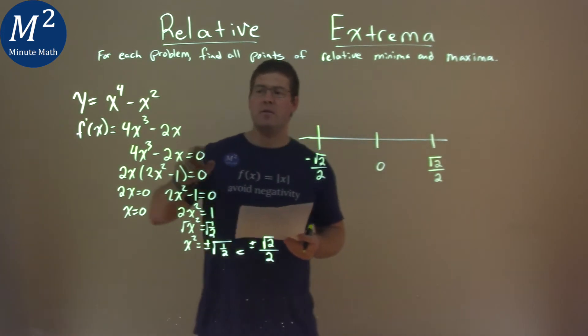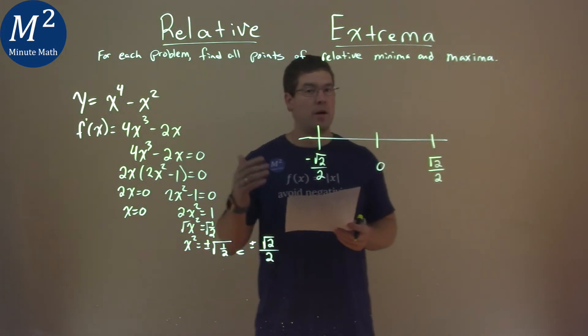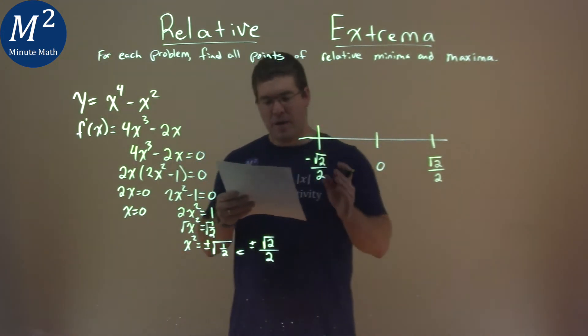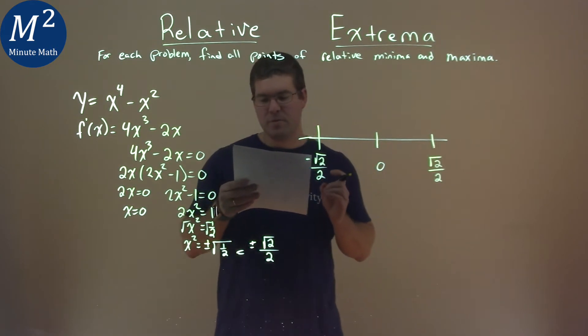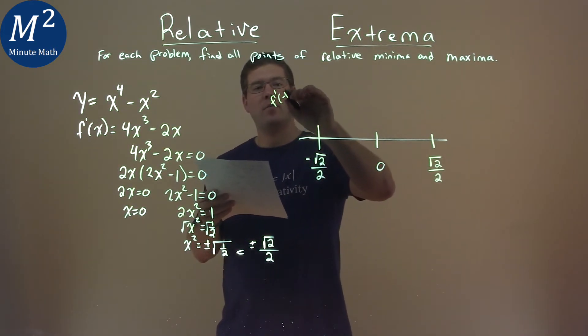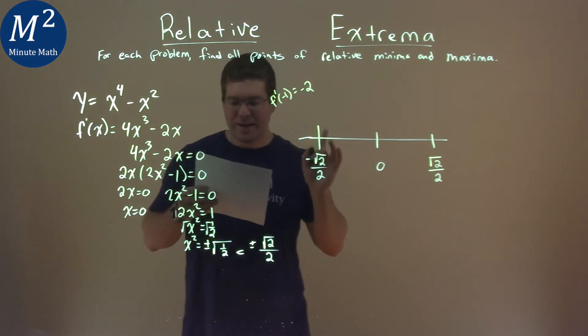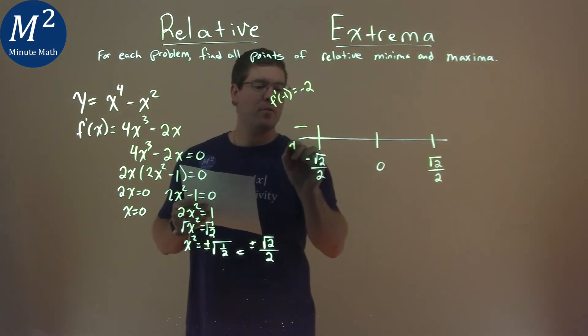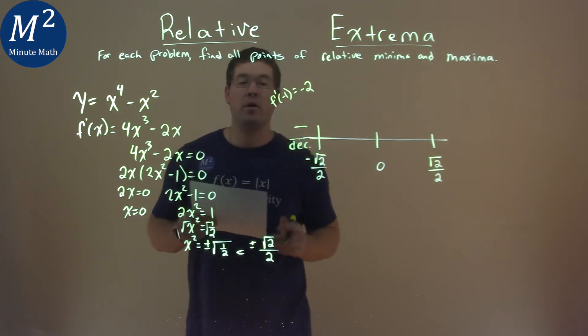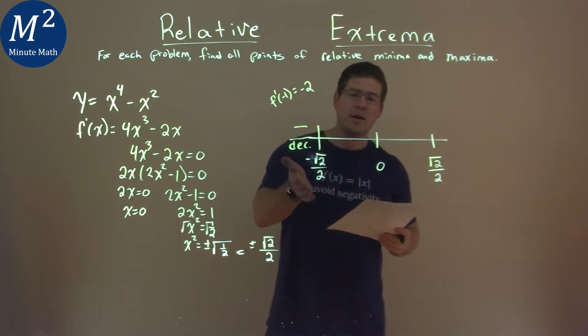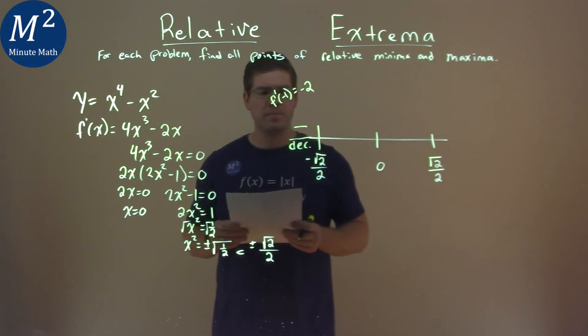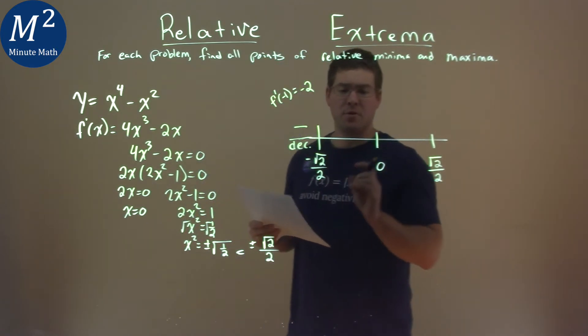So we're plugging values into our derivative here to see if they're positive or negative. A value that's less than negative square root 2 over 2 is negative 1. So I picked f prime of negative 1, plugged it into my function, and I got negative 2. I just care that it's negative, and therefore we're decreasing on that interval from negative infinity to negative square root 2 over 2.